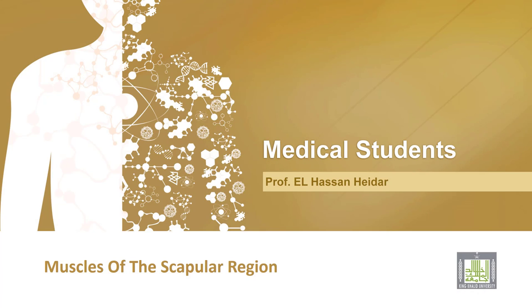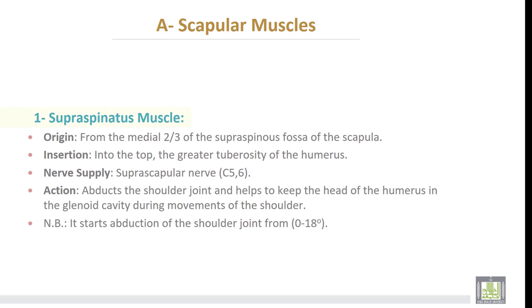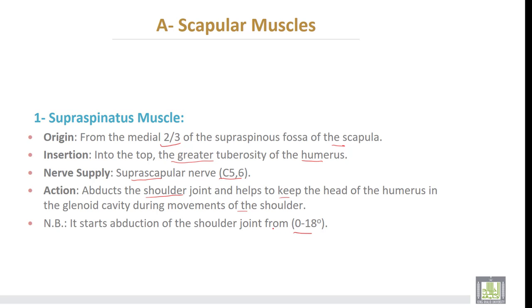Muscles of the scapular region. The first muscle is the supraspinatus muscle. It takes origin from the medial two-thirds of the supraspinous fossa of the scapula and is inserted into the top of the greater tuberosity of the humerus. Nerve supply is from the suprascapular nerve, cervical 5 and 6. Action: it abducts the shoulder joint and helps to keep the head of the humerus in the glenoid cavity during movements of the shoulder. It initiates abduction of the shoulder joint from 0 to 18 degrees.